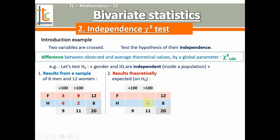How to fill a proportion sample? By cross products — of course, this is the best way to do it. For instance, one value will be 11 times 8 divided by 20; for the value on the top left, 9 times 12 over 20, and so on. The result will be these values. The fact that there are decimals is not a problem, even if we're talking about number of people, because it's an average sample — so these are average numbers.